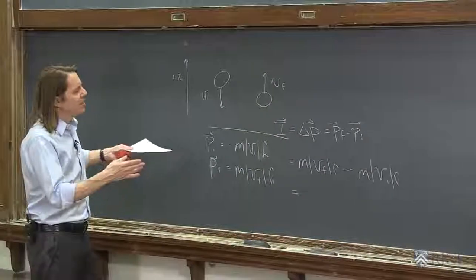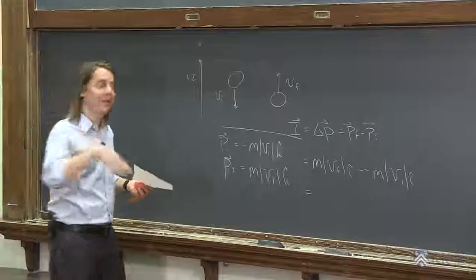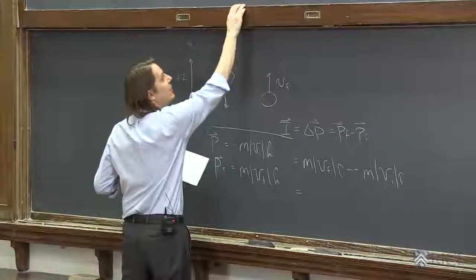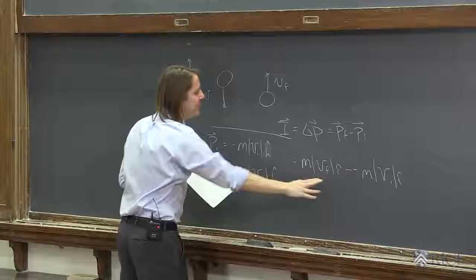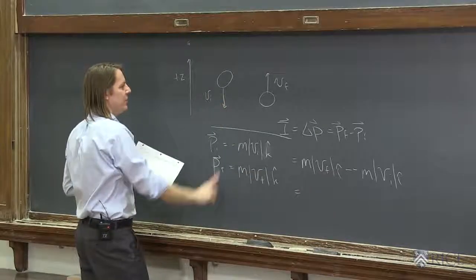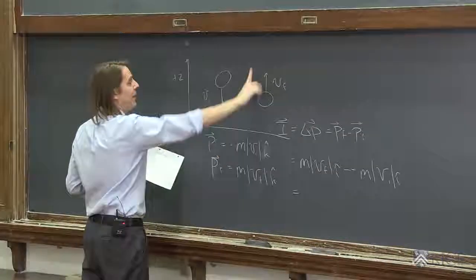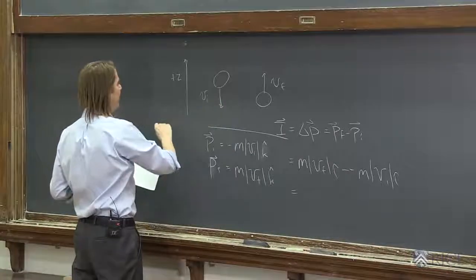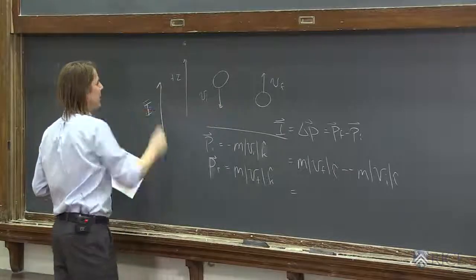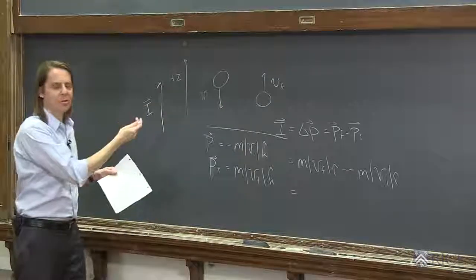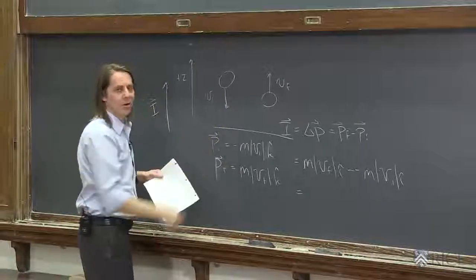So that's just a little thing to keep in mind. Intuitively you get it, but sometimes doing problems you forget it's actually a big change. The direction of that change vector is up — final is up, minus initial which is down — so the total vector is up. The impulse is up, which makes sense because the table pushes up on the ball.